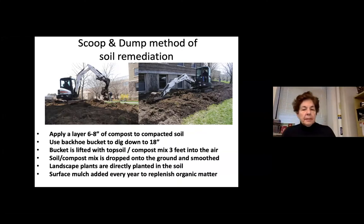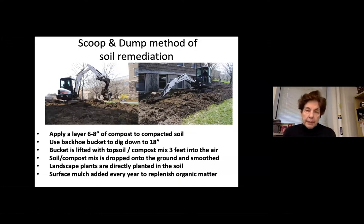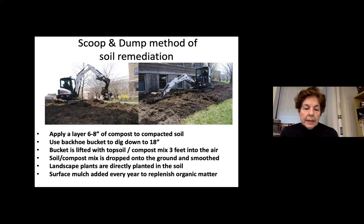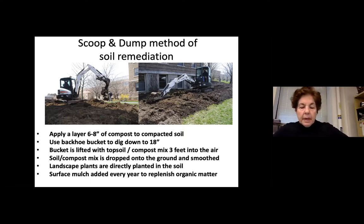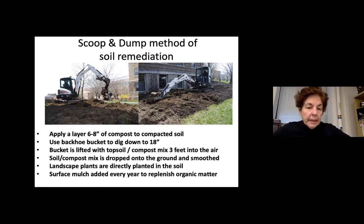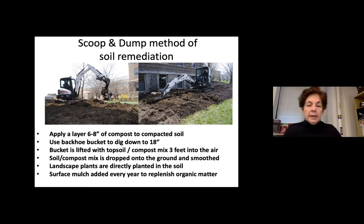Scoop and dump is very simple — we've been doing this for 20 years on Cornell campus. We apply a layer of 6 to 8 inches of specified compost on top of the compacted soil. Then we use a backhoe bucket to dig down 18 inches, lift the bucket with the topsoil-compost mix three feet in the air, and dump it on the ground, then generally smooth it out. We don't rototill. We plant directly into the soil and mulch the surface every year to replenish organic matter until we achieve canopy closure.